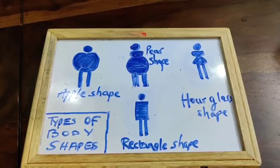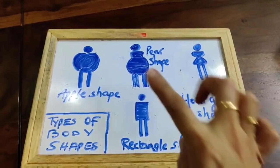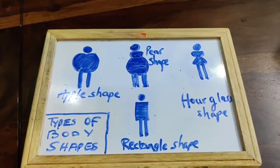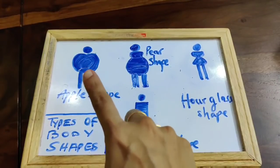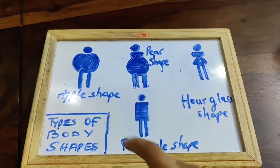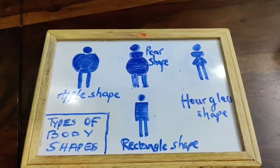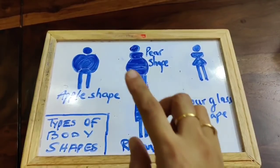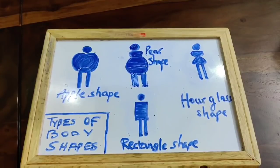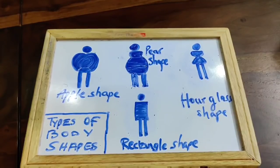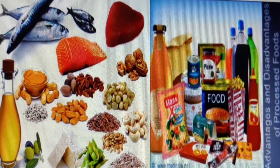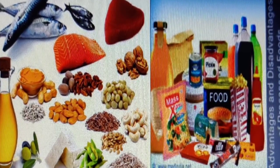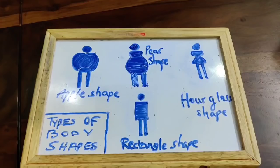When talking about the apple shape body type, as you can see here, the body looks like an apple — the hips, legs, and arms are smaller, whereas fat is usually accumulated in the tummy area. This is a very dangerous type of body shape because when fat accumulates in the tummy area, it leads to an increased risk of heart disease, diabetes, and all kinds of metabolic syndromes.